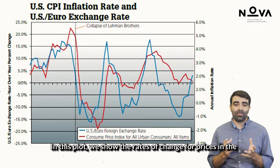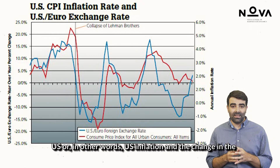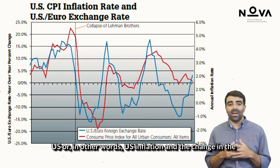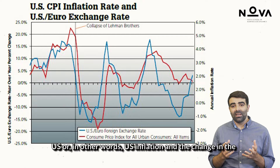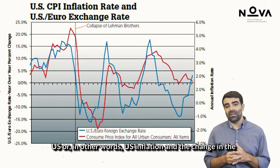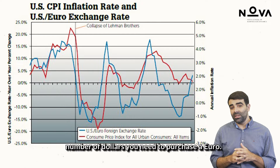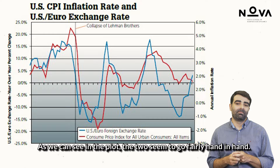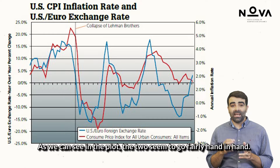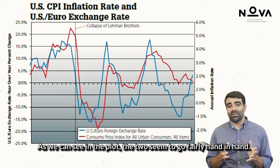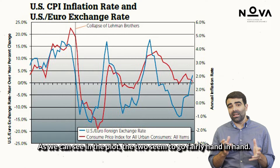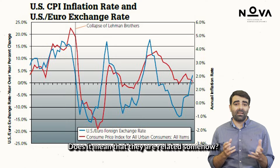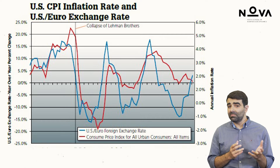we show the rates of change for prices in the US, or in other words, US inflation, and the change in the number of dollars you need to purchase a euro. As we can see in the plot, the two seem to go fairly hand in hand. Does it mean that they are related somehow?